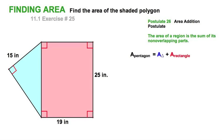So I already know base times height for the rectangle, one half base times height for the triangle. In the case of a right triangle, I need the two legs. Well, they're not given directly...